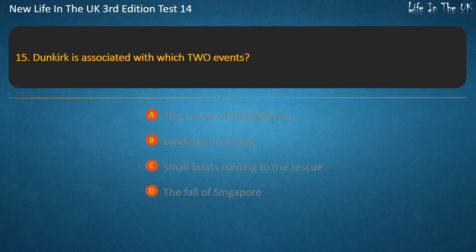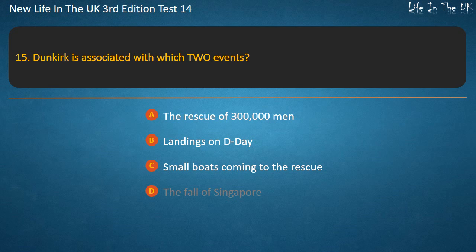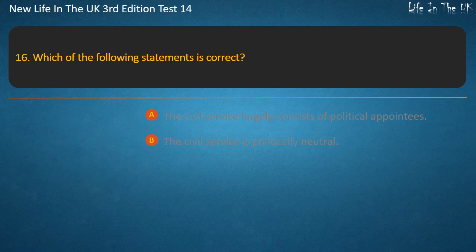Question 15. Dunkirk is associated with which two events? The rescue of 300,000 men.